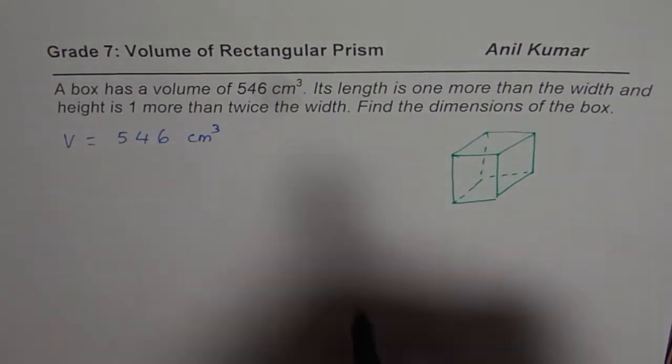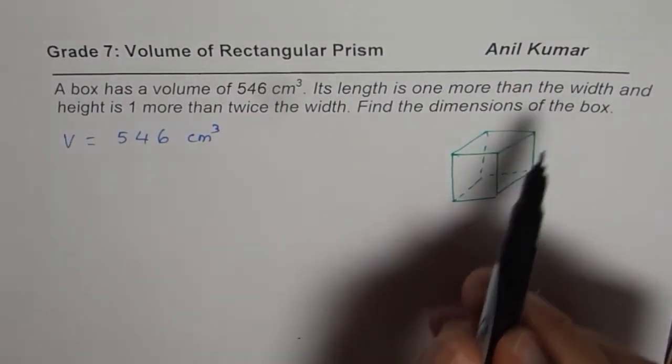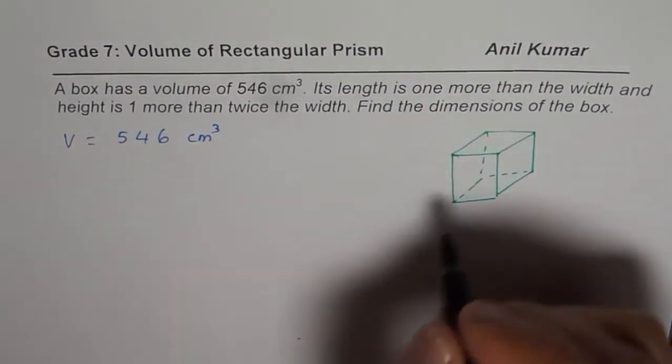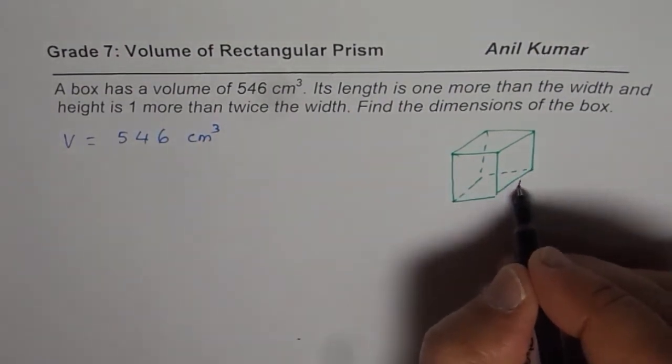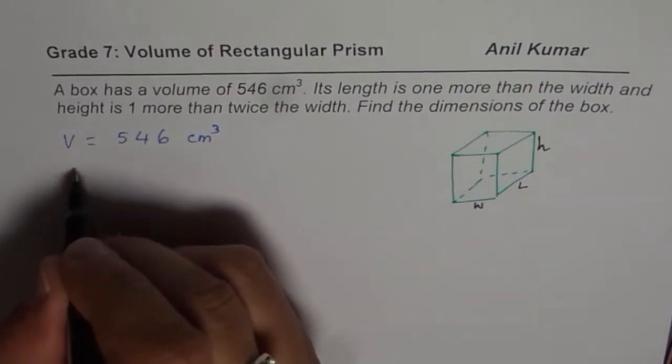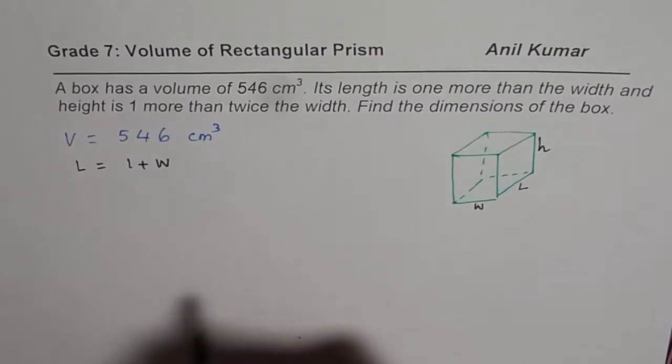Now what else do we know? It says length is one more than the width. That means let us say we have length, width and height. So we are saying that length equals one plus width, one more than width.